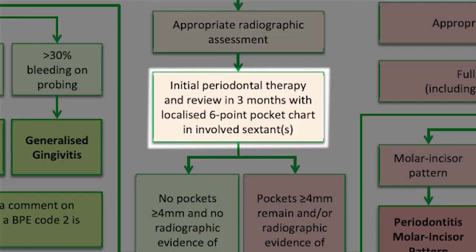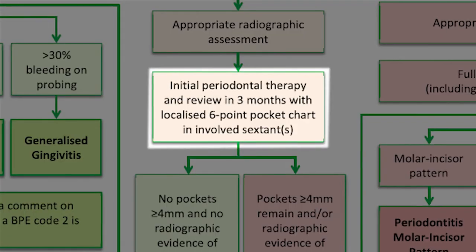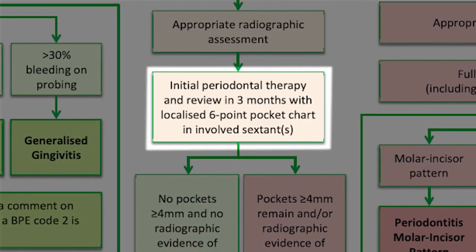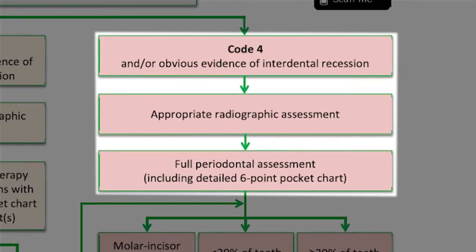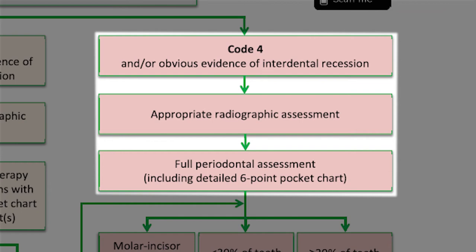So that was for a BPE of 3, but if the first time you saw the patient they had a BPE of 4, you skip the initial periodontal therapy and the 8-12 week wait, and go straight into taking radiographs and doing a full 6-point pocket chart to form your diagnosis.